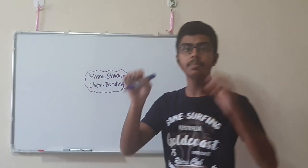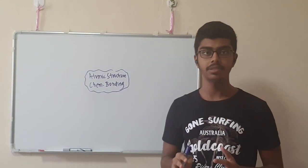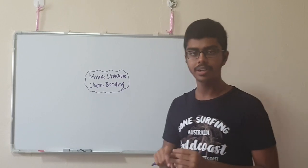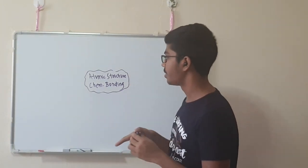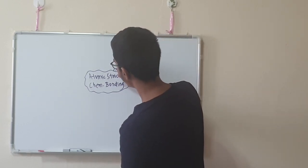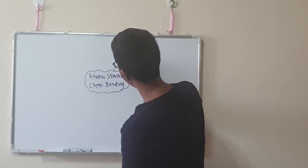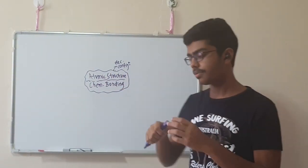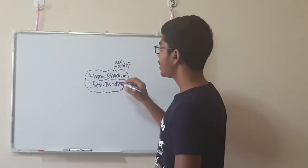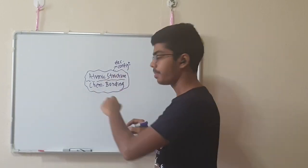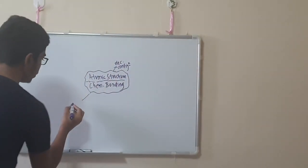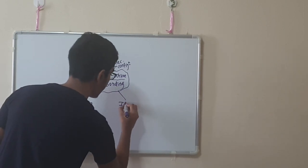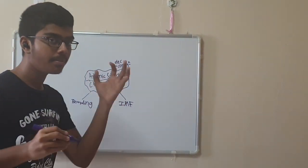These two are the most important chapters of the entire chemistry syllabus. If you want to do well in chemistry, these are the two topics that must not be a weakness. Atomic structure deals with electronic configurations of an atom or ion. Chemical bonding has two sub-topics: the idea of bonding, and the idea of IMF — intermolecular forces.